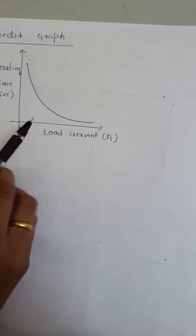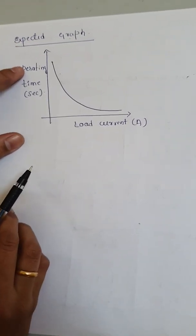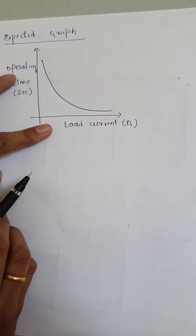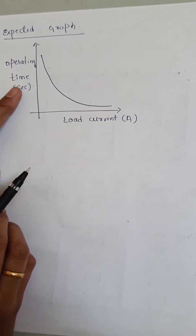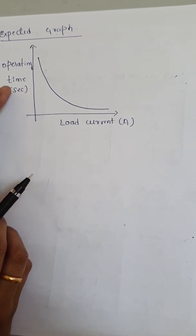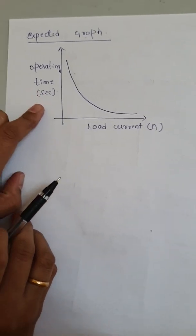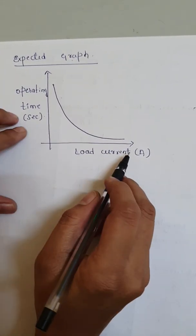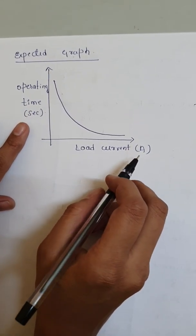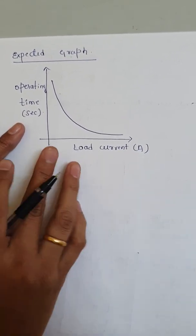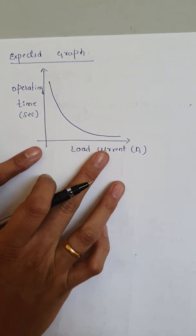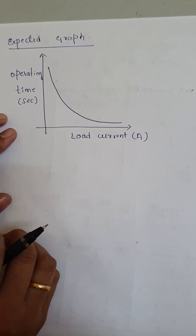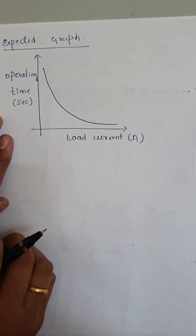This is the expected graph for the experiment. From both cases, the load current and operating time are inversely proportional — more the load current, the shorter the operating time for the fuse to melt. For case 1 and case 2, we plot this graph on a normal graph sheet. This concludes the experiment on the characteristics of a fuse.